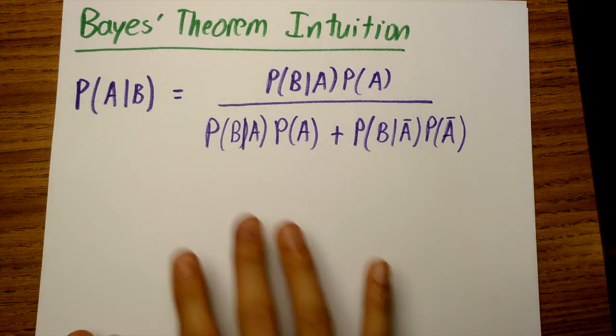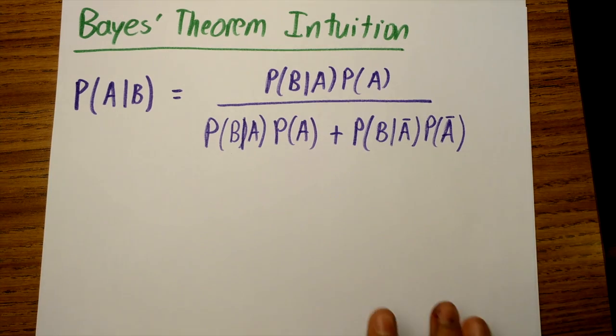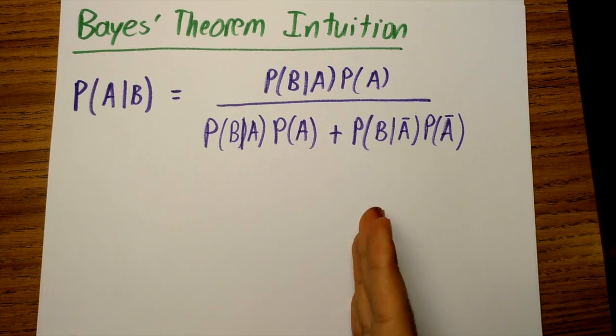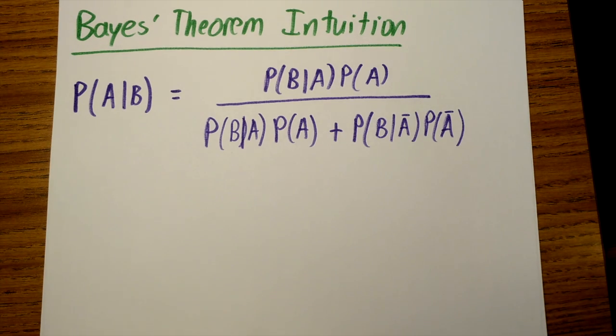First, to understand this complicated formula, we need to go back to some ideas from discrete probability. Discrete means it describes countable, separated events instead of a continuous range of numbers.